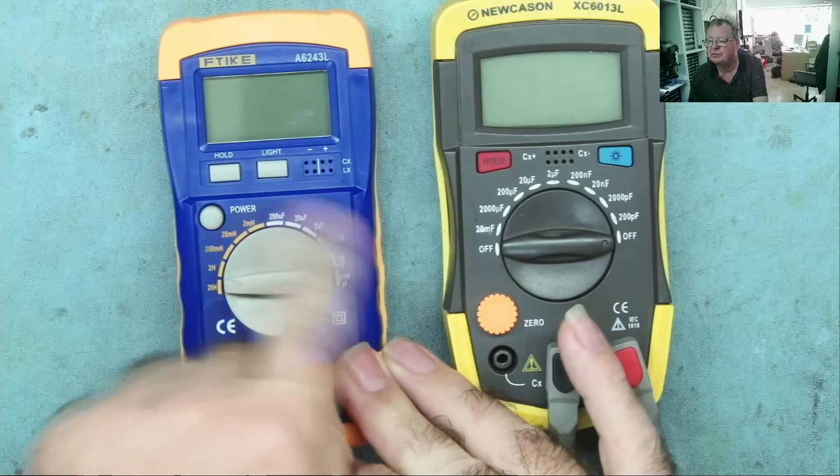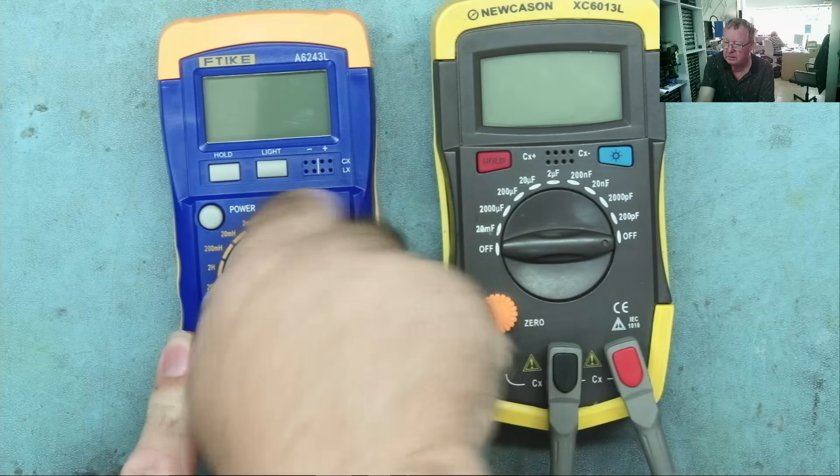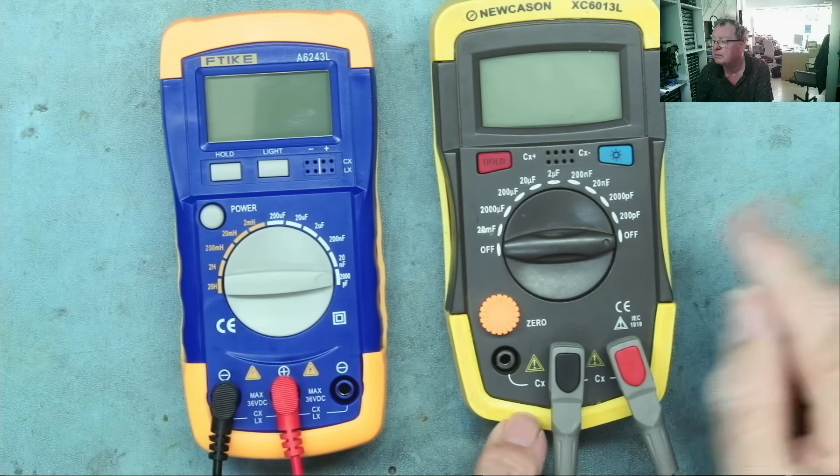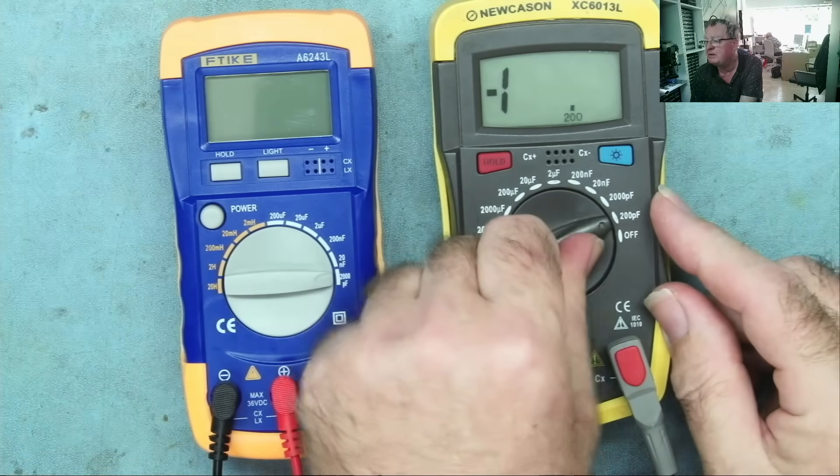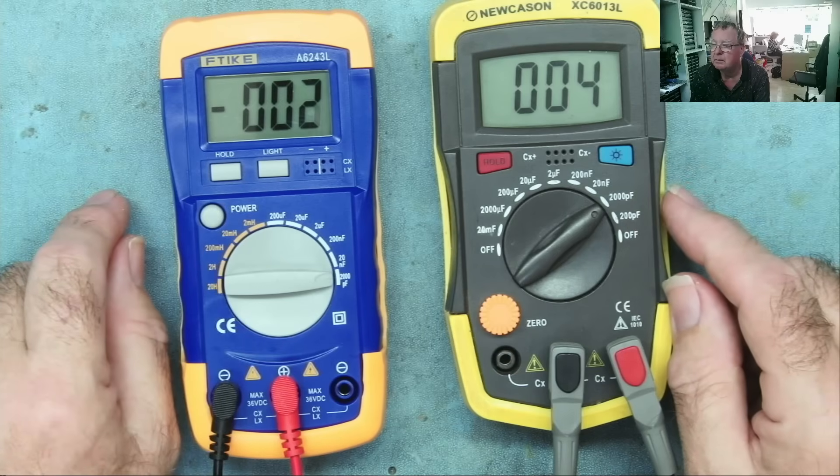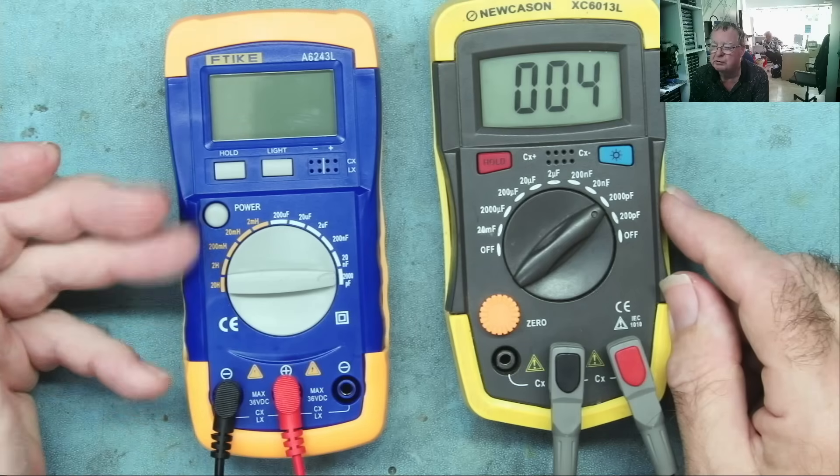This has just the various ranges here. This has an off position at either end. So we'll put this on to the 2000 picofarads. We'll put this on the same. You'll see this one comes on. This one has a power switch. And it's a physical power switch, so when it's off, it doesn't drain the battery.